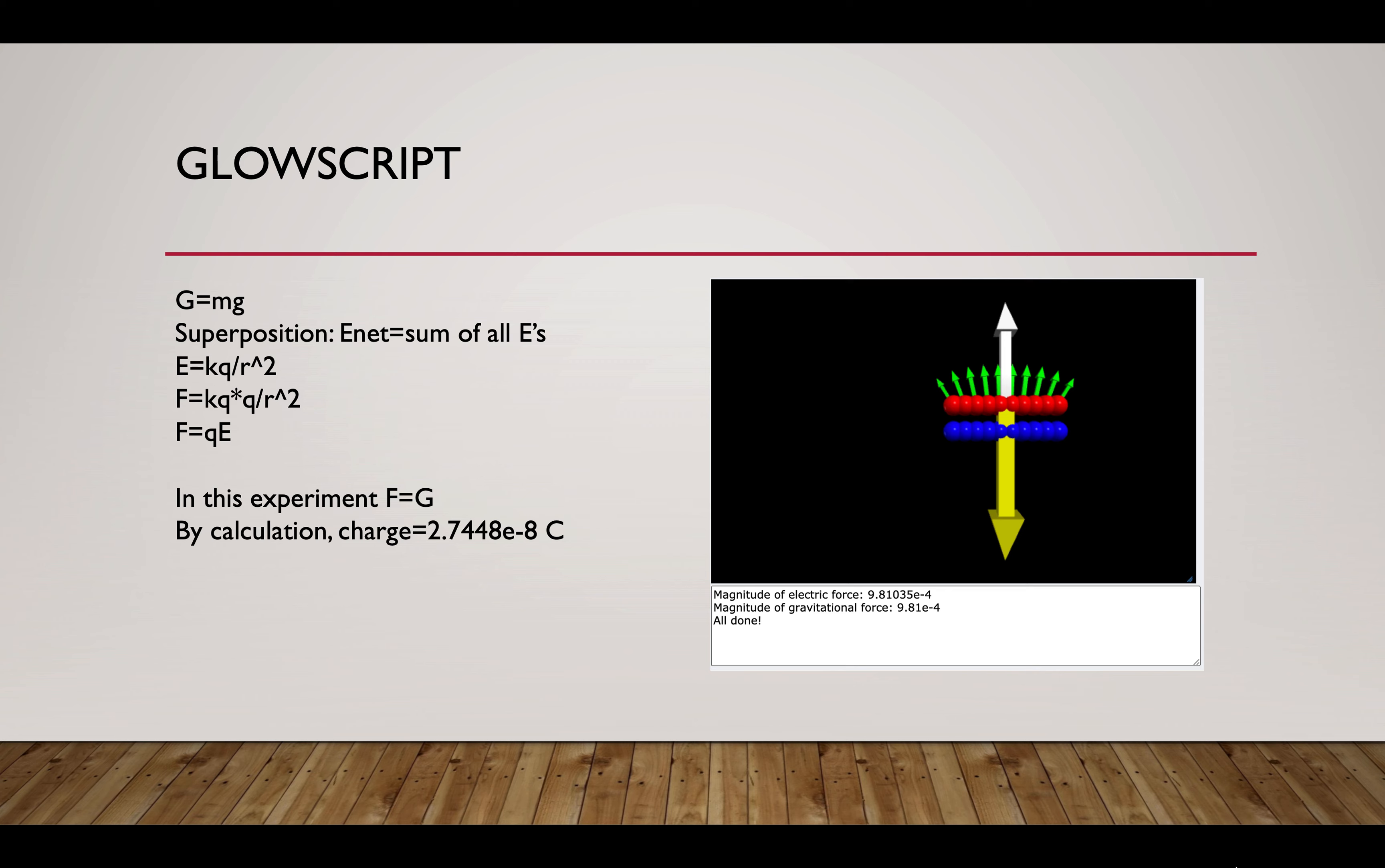Here is the result from our Glowscript coding. I'll briefly talk about the calculation part. We have the gravity G equals mass M times gravity constant g, so we know the force on the object exerted by Earth. Then we use superposition: E net or E total of the electric field is the sum of all E's from all different directions. And we know that E equals K times Q divided by R squared.